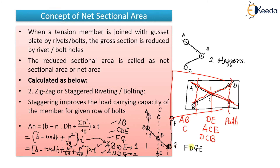For path F-D-G-E with three staggers — one, two, three — you put P²/4G three times. So those were the formulas for calculation of net sectional area of a plate.